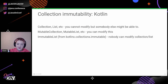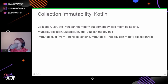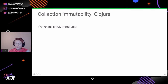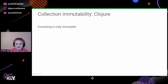Groovy is roughly the same as Java but has a nicer way to cast the collection to an immutable counterpart. Scala has three types of immutability: a Scala collection where you cannot modify but someone else might be able to; immutable where nobody can modify it; and regular mutable collections. In Kotlin, the situation is roughly the same, however immutable collections need to be imported from outside — namely 'kotlinx.collections.immutable'. In Clojure, everything is truly immutable.